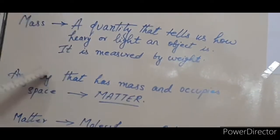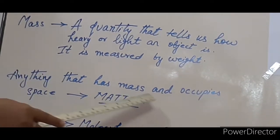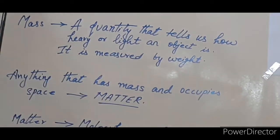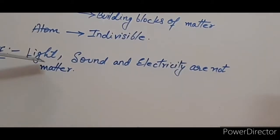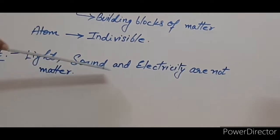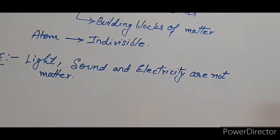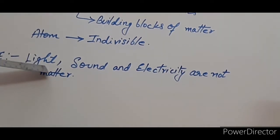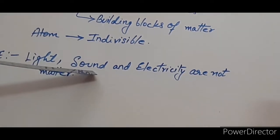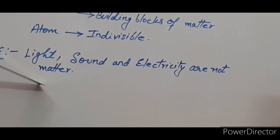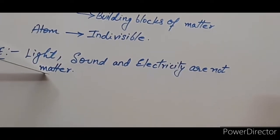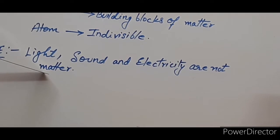Ultimately, we can define matter as anything that has mass and occupies space. Now, we should note one thing here. Light, sound and electricity are not matter. I repeat, light, sound and electricity are not matter. Because they do not have mass and they do not occupy any space.